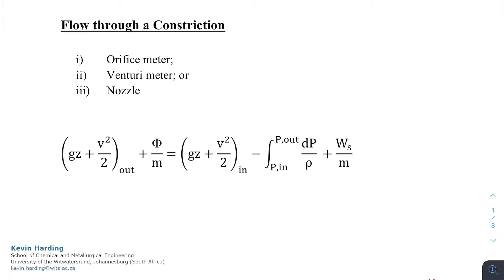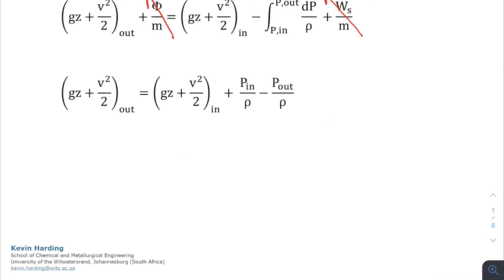From the mechanical energy balance, we're going to firstly assume that we have a very small section of pipe, and in that section of pipe we have no pump, so ws is going to be zero. Because it's such a small section of pipe, we're also going to assume that there is no friction. If we then simplify and expand the integral, we're left with gz plus velocity squared over 2, equal to gz plus velocity squared over 2, plus the two pressure terms divided by the density.